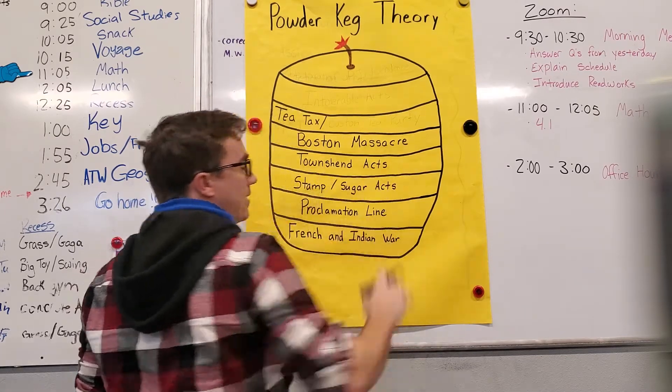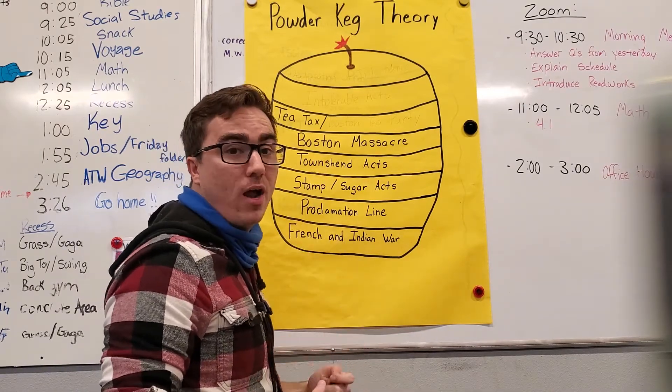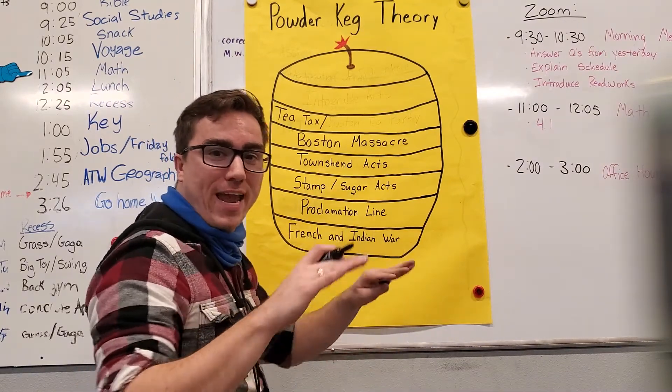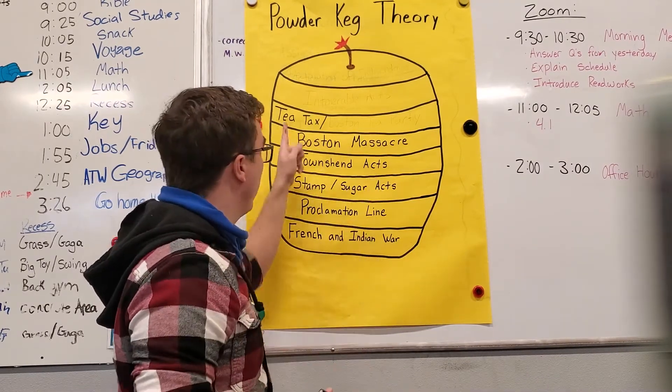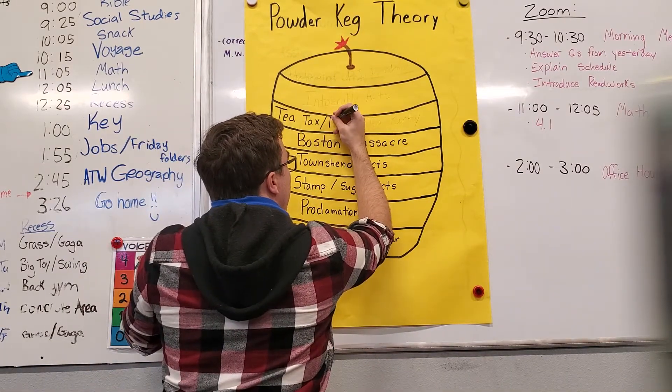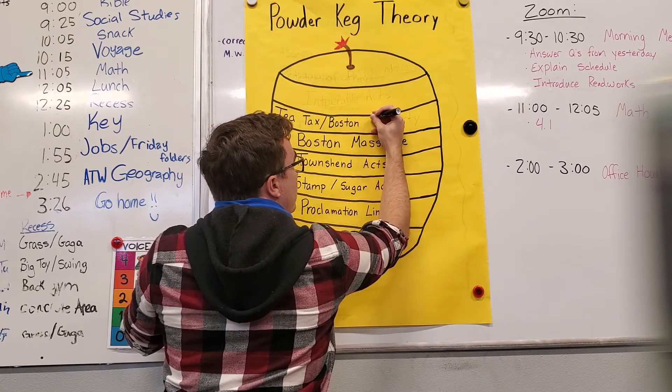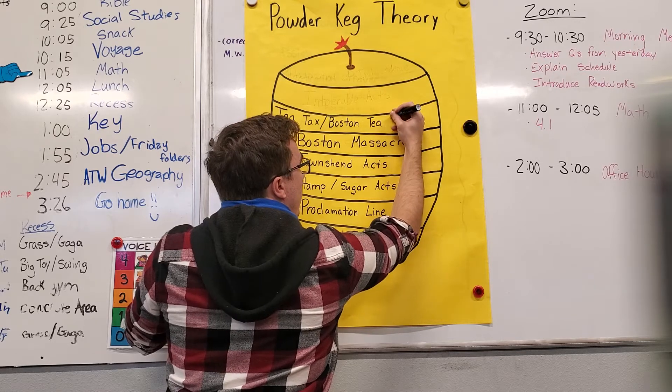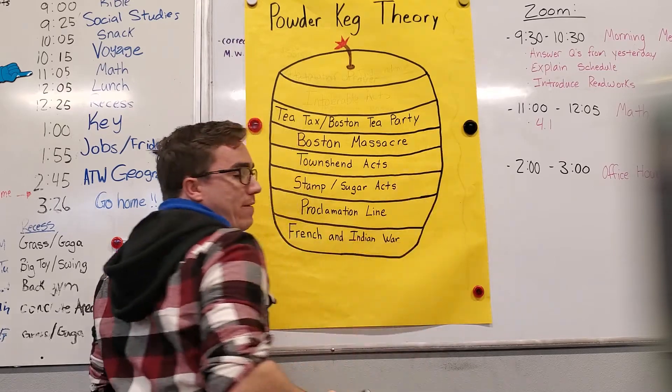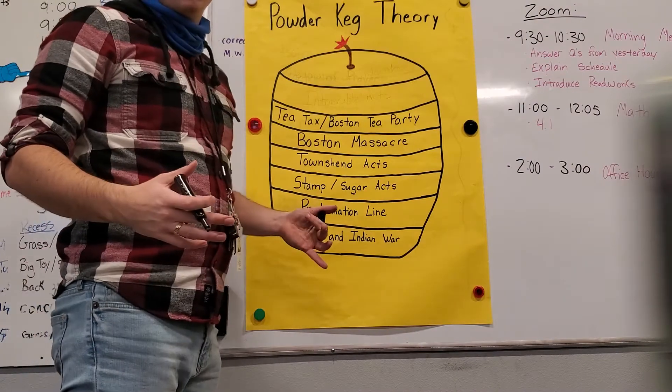So again, with the Townshend Acts, tea tax was already a thing, but because there was so much rioting and boycotting and just disdain about the Townshend Acts, they repealed or they canceled all of those taxes except for one, which was the tea tax. And because of that, the colonists did not like it, and the Sons of Liberty, which were patriots, decided to sneak onto those ships and have the Boston Tea Party, where they dumped 342 crates of tea.